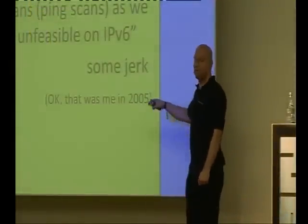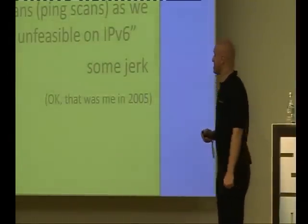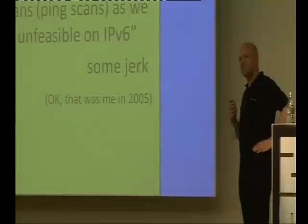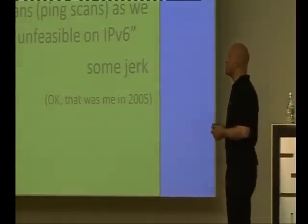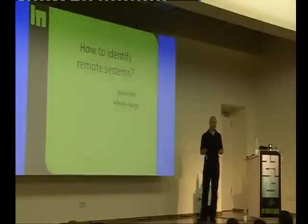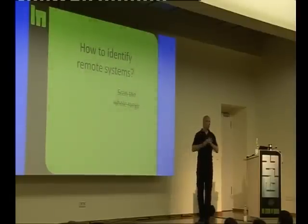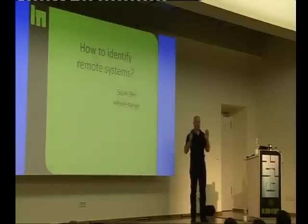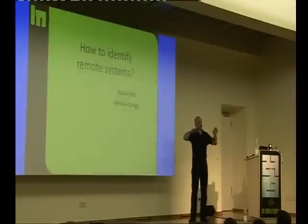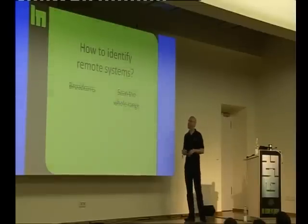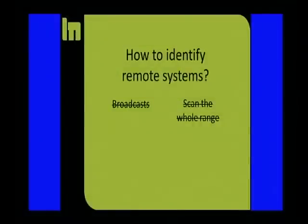Some jerk said that — actually it was me, five years ago. But this year I thought about whether it's actually true and started doing statistical research. How do we identify remote systems? We can't scan the whole range. If we had more than one million times gigabit Ethernet connections and could send that many packets, and routers supported it, it would still take something like 5,100 years — not feasible. We also don't have broadcasts in IPv6, so no remote broadcast ping scanning either.